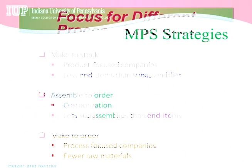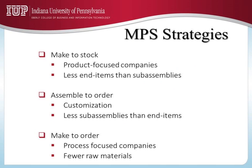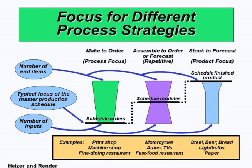Going back, we can now understand what these are. In make-to-stock, you have product-focused companies. In assemble-to-order, you assemble many customized end items using standard sub-assemblies and components, and you schedule at the sub-assembly or module stage. In make-to-order, you have process-focused, customized products, and the MPS will be for the raw materials — you schedule orders from the beginning. For make-to-stock, the master production schedule will be for the finished end items.